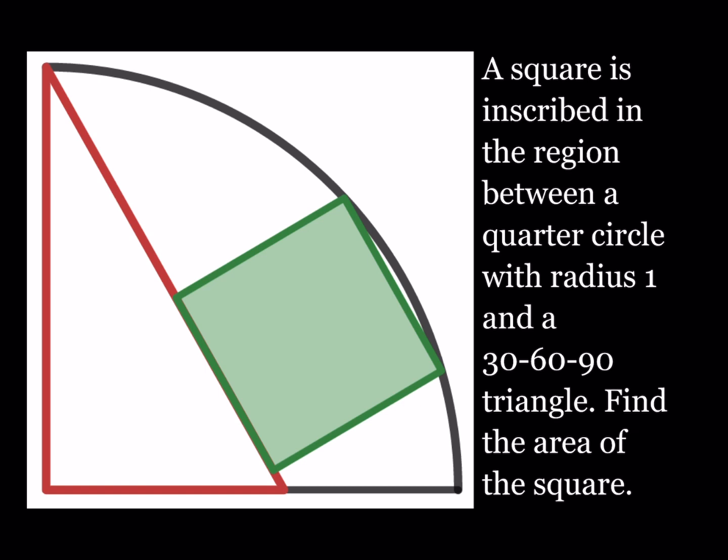Now, we do have a square that's inscribed in the region between a quarter circle with radius 1 and a 30-60-90 triangle. Find the area of the square. I just want to tell you something about this puzzle - trying to set it up, drawing this one wasn't super easy. You had to figure out where those points are, the coordinates of the square, so on and so forth. It took a little bit of coordinate geometry, but in the solution we're not going to use those ideas. If you want to look into this, I can also share the link to the Desmos drawing on Twitter if you let me know.